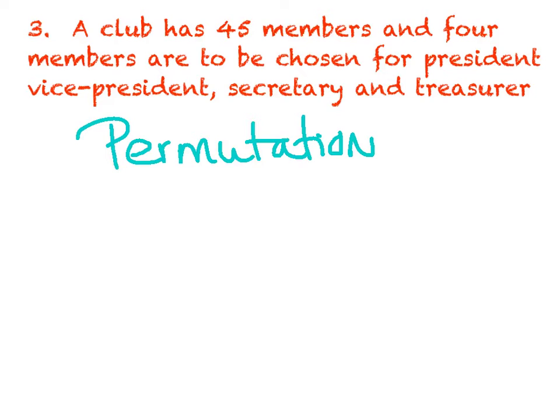So if you can distinguish between the different roles, that's your permutation position placements. And I would set this one up as I have 45 to choose from and permutation for I'm going to choose four of them. But again, the second I start to get specific giving specific roles out, that is a permutation.